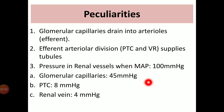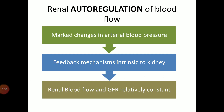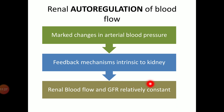Similar values have been found in squirrel monkeys and also in humans. Like other major organs of our body, the kidney also has the property of autoregulating blood flow. This means even if there is a fluctuation in the arterial blood pressure — the pressure of blood coming towards the kidney — the kidney will activate some feedback mechanisms so that renal blood flow and the glomerular filtration rate remain relatively constant. This autoregulation is a set of feedback mechanisms from the kidney itself.